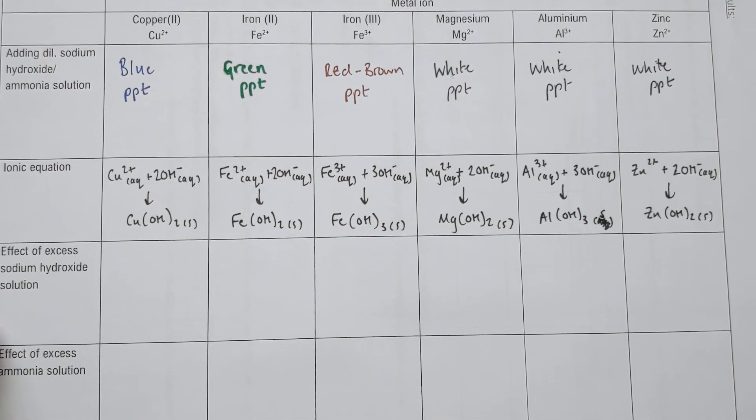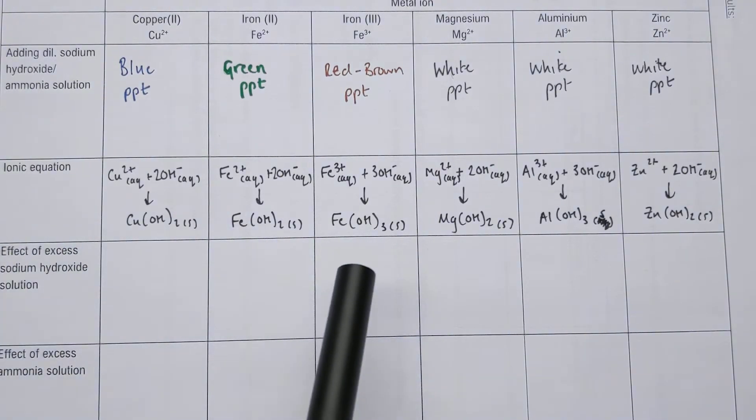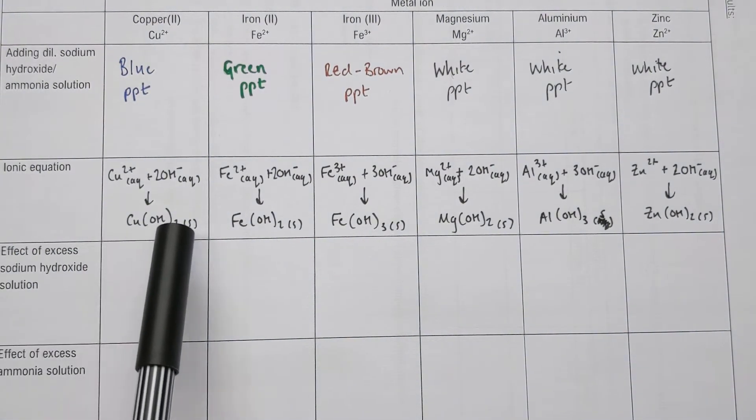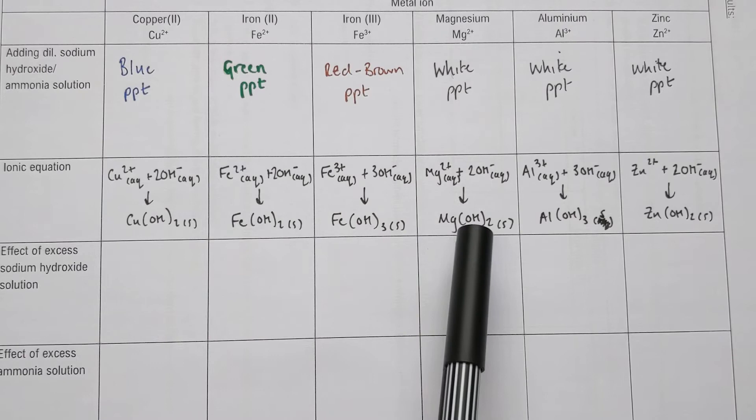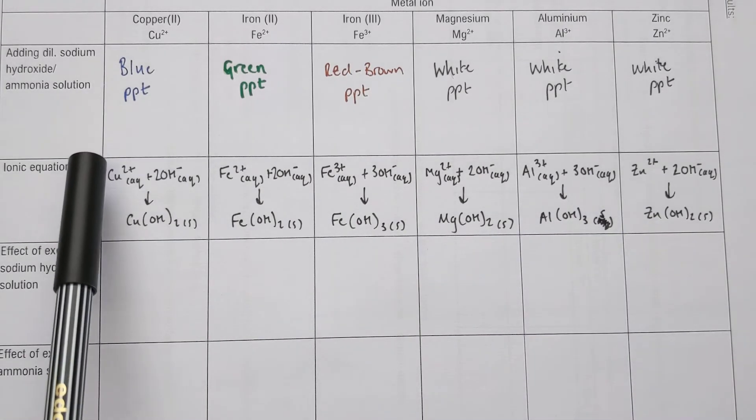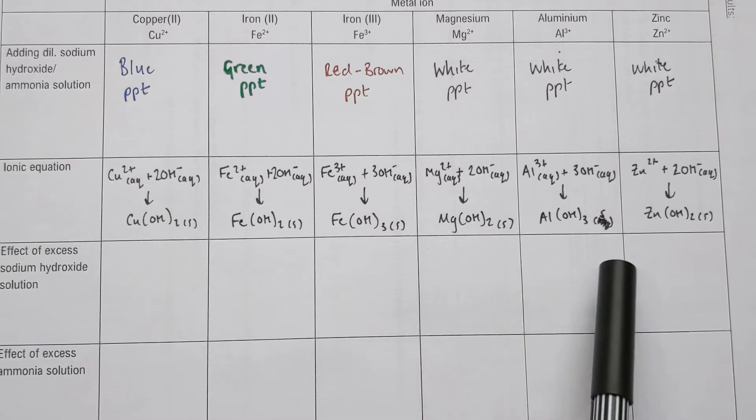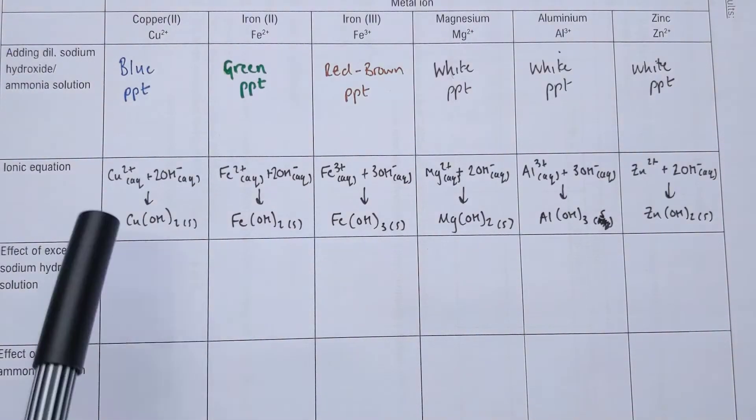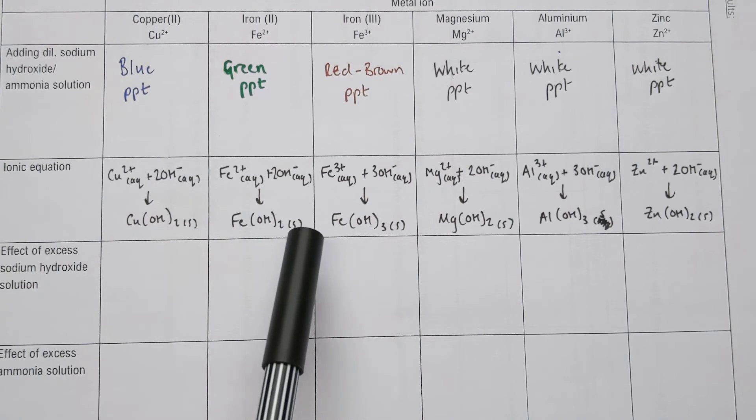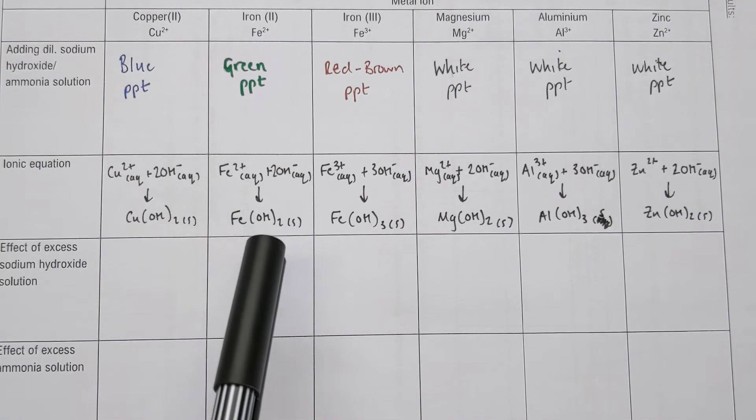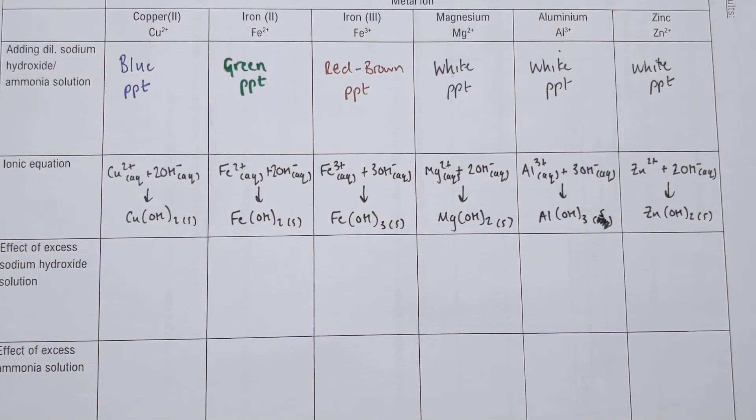The ionic equation is similar between each one. In each case, you're forming the hydroxide compound of each metal ion, just by doing a swap and drop of the metal ion and OH minus. That gives you the ionic equations for each of these different ions. In each case, the precipitate is the solid formed from two different solutions, so it's got a little S beside the hydroxide.